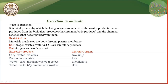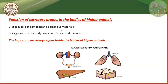What is the function of excretory organs in the bodies of higher animals? First, the removal of harmful and poisonous materials present inside the body. Second, regulation of the body's content of water and minerals — regulating the proportion of salts and water in the body. Blood has its own specific viscosity and pH, so there must be regulation to maintain these inside the body. The important excretory organs include the kidneys and the lungs.